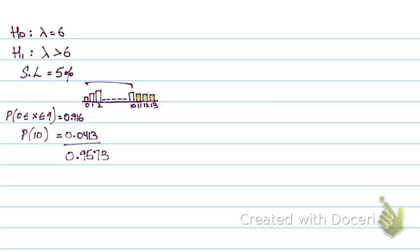So if my observed value lies beyond 11, inclusive of 11, I will reject the null hypothesis — the lambda has indeed increased. But if my observed value lies between 0 and 10, I will accept the null hypothesis. That's how you figure out your critical region and then carry out the test.